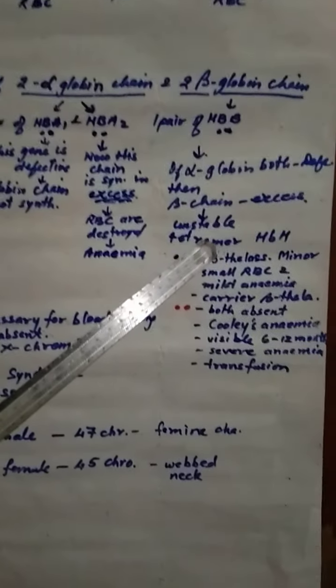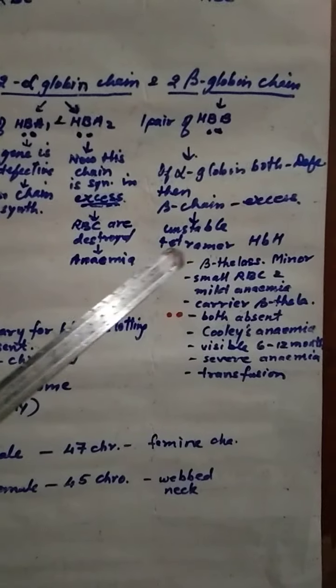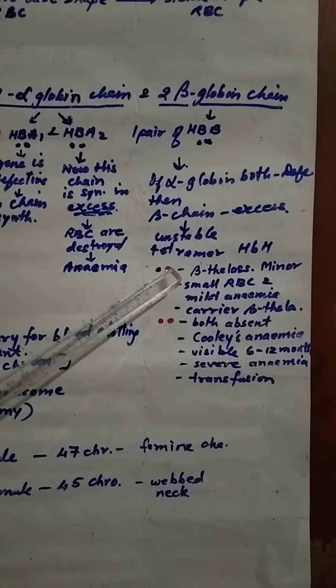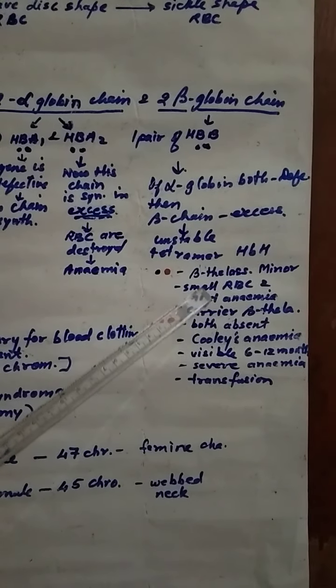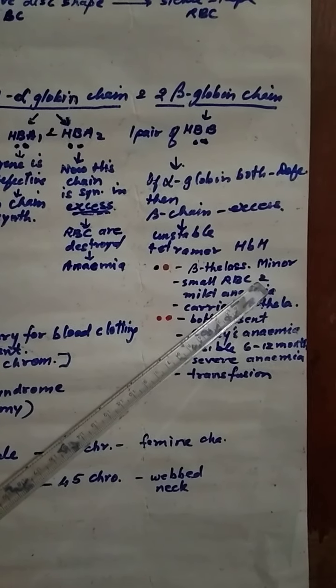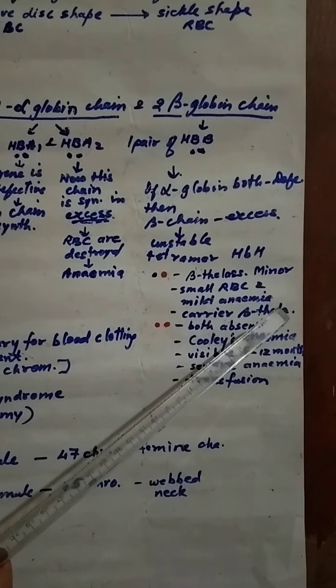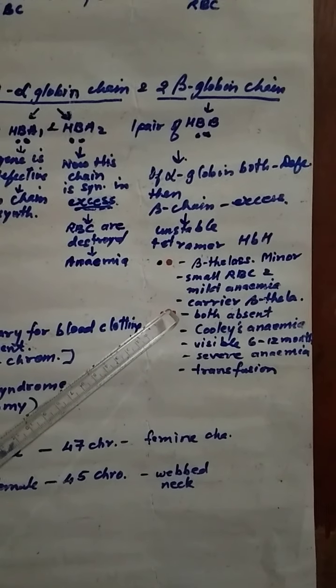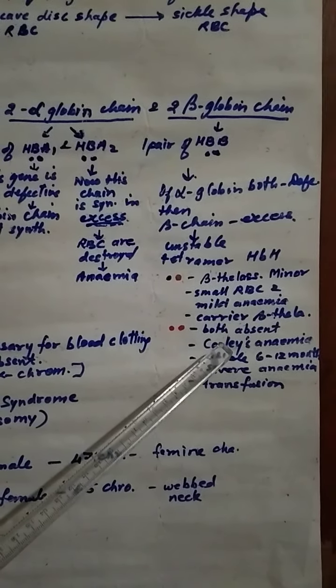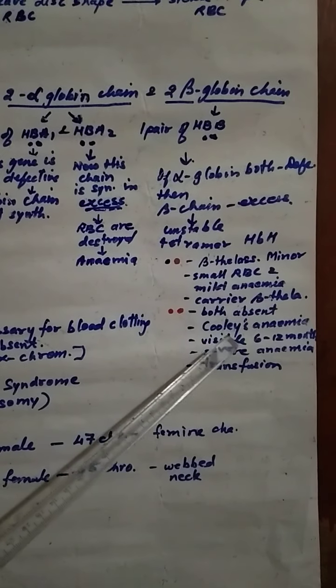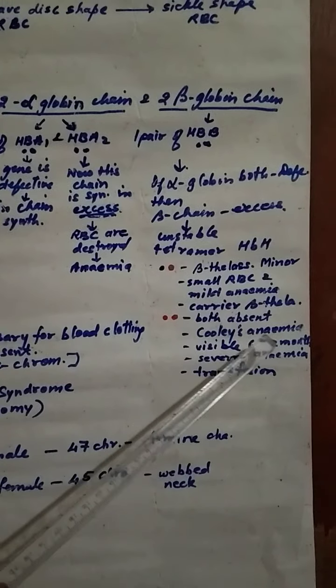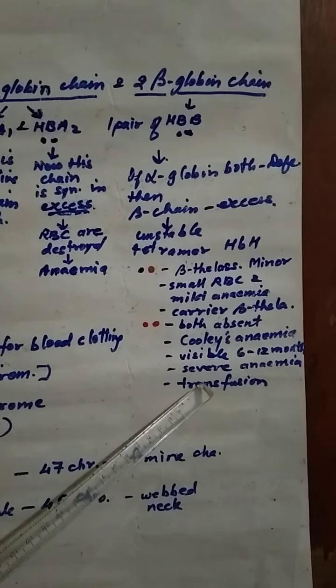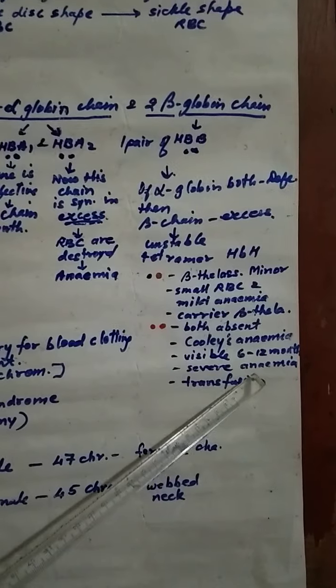And it will create problem. Here there are 2 conditions. Condition number 1, beta-thalassemia minor. In this case there are 2 genes, you know, one pair of genes. Suppose I have shown red is defective, one is normal. In this case they will have small RBCs, they will have mild anemia and they will be carrier of beta-thalassemia. If suppose both the genes are defective, shown by the red, then what will happen? They will suffer with Cooley's anemia. This is visible from 6 to 12 months of a child and this is called severe anemia. They need continuous transfusion of blood, otherwise the child may die.